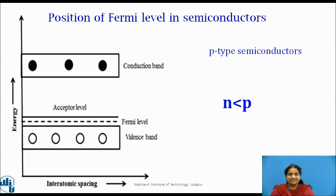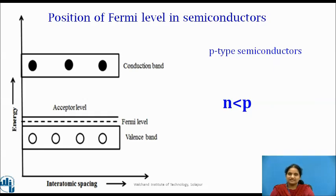For P-type semiconductor, trivalent impurity is added. Each trivalent impurity creates a hole in the valence band and is ready to accept an electron. The addition of trivalent impurity creates a large number of holes in the valence band. At room temperature, the number of holes is greater than the number of electrons in the conduction band. Hence, the probability of occupation of energy levels by the holes in the valence band is greater. Therefore, the Fermi level in P-type semiconductor lies close to the valence band, and the acceptor level represents the ground level of the hole.